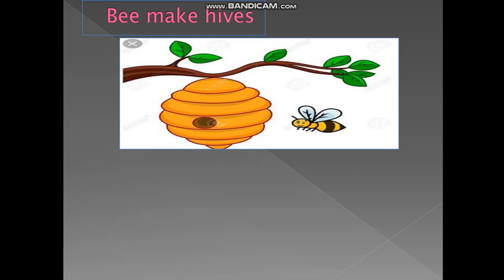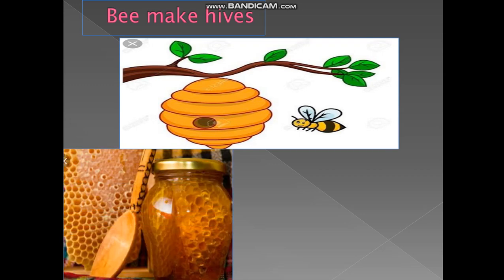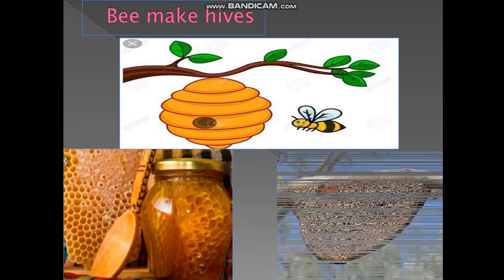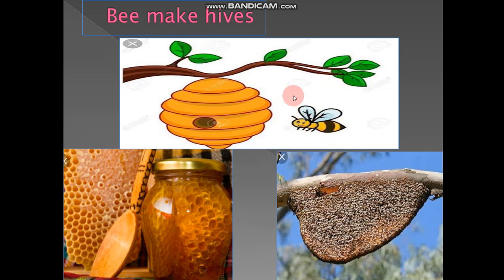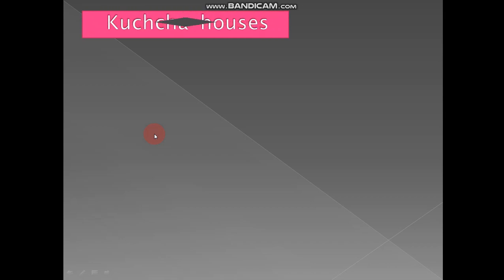Not only human beings, children — even animals also make houses and live in them. For example, a bee. Can you see the picture? The bee makes a hive. Who will make the hive? The bee will make the hive. And who will give us honey? The bee will give us honey. See, this is known as a beehive. The honey is very tasty. So now you know animals also live in houses.